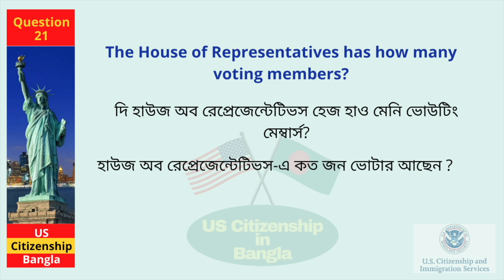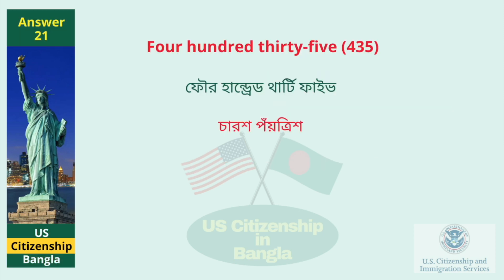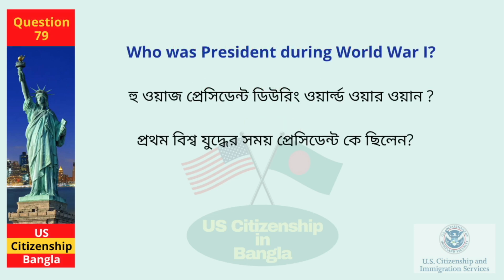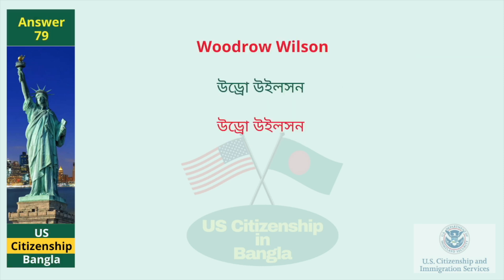The House of Representatives has how many voting members? 435. Who was President during World War I? Woodrow Wilson.